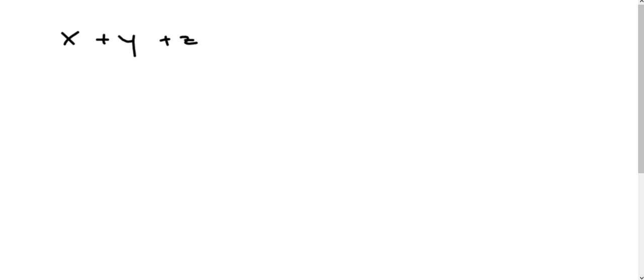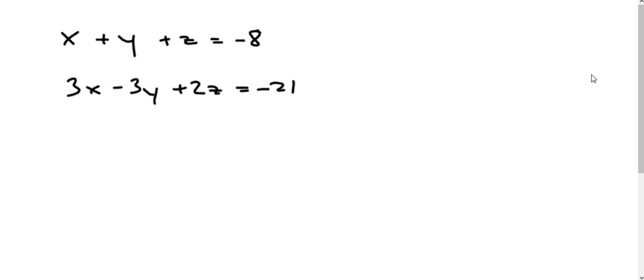Let us find out how to use Cramer's Rule to solve a system that has three variables — a three equation, three variable system. I've covered Cramer's Rule with two-variable systems before, and now we're going to try solving with three variables. It's very similar to how we did it before, so let's go through and set this up.